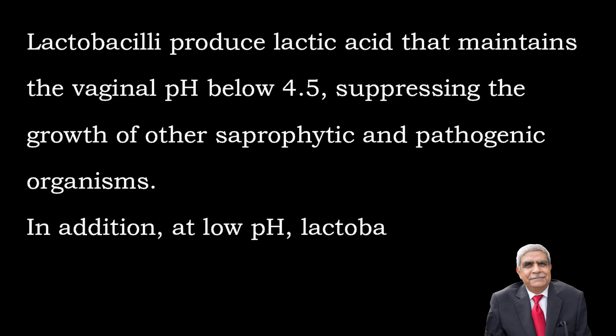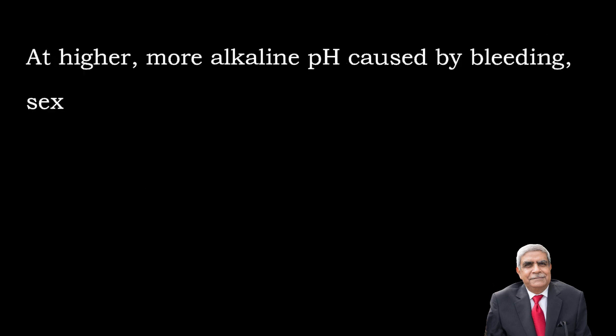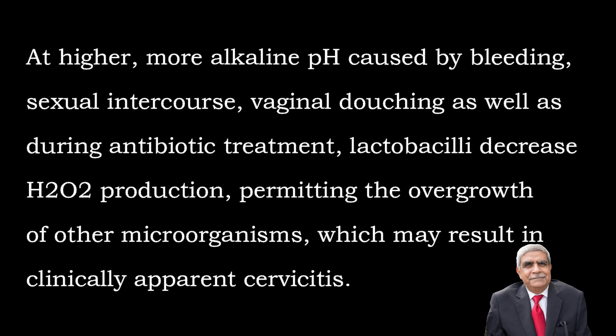Lactobacilli produce lactic acid, which maintains vaginal pH below 4.5, thereby suppressing the growth of other saprophytes and pathogenic organisms. In addition, at low pH, lactobacilli produce bacteriotoxic hydrogen peroxide. At higher or more alkaline pH caused by bleeding, sexual intercourse, or during antibiotic treatment, lactobacilli decrease hydrogen peroxide production, permitting overgrowth of other microorganisms, which may result in clinically apparent cervicitis.